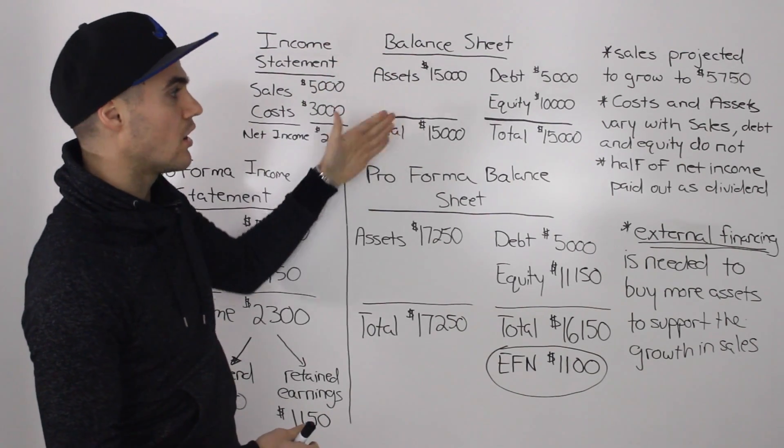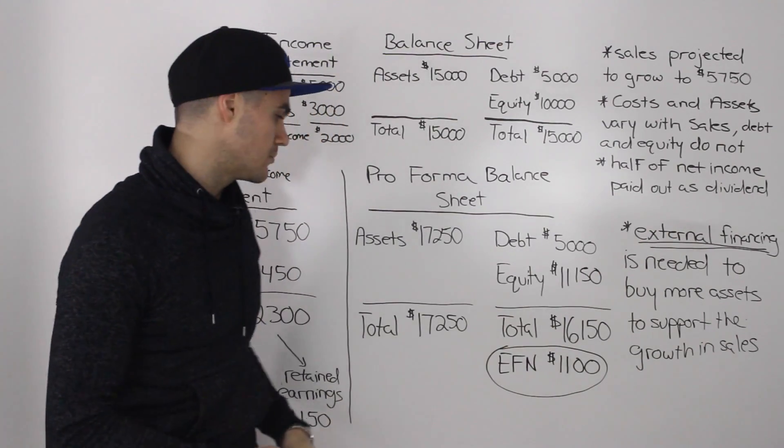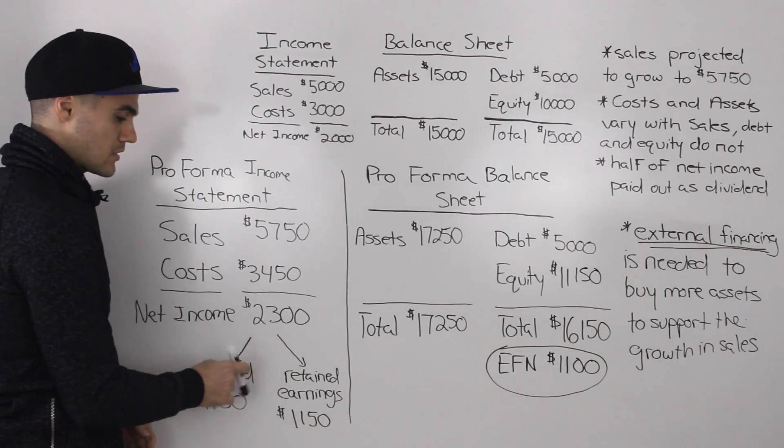So instead of just having a general asset class, maybe you'll have current assets and long-term assets. Sometimes they'll tell you the actual dividend amount paid. But just overall, same process.